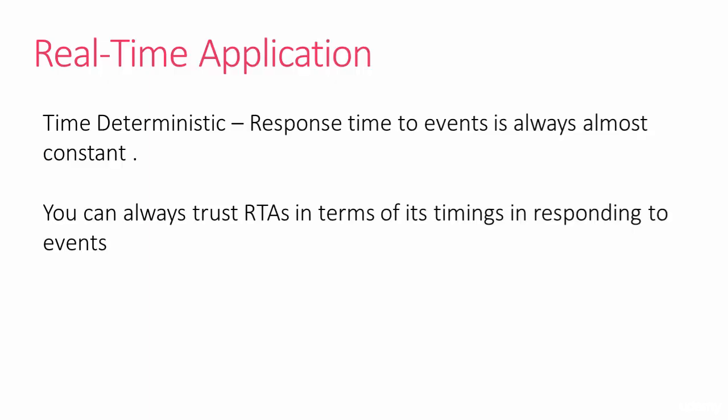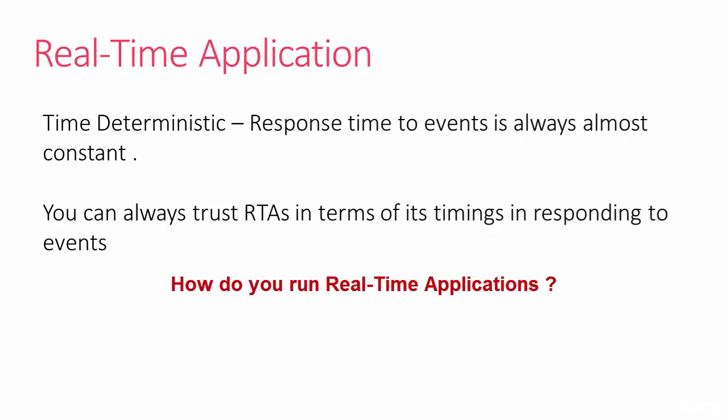In the previous lecture we understood about what is a real-time application. We understood that a real-time application is time deterministic, meaning its response time to events is always almost constant. You can always trust that application in terms of its timings in responding to events. But how to run the real-time application? You cannot take a real-time application and run it on a general-purpose OS like Windows or Linux, because they will never help you meet strict timing requirements.